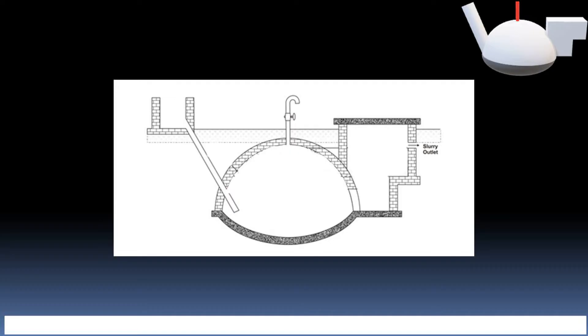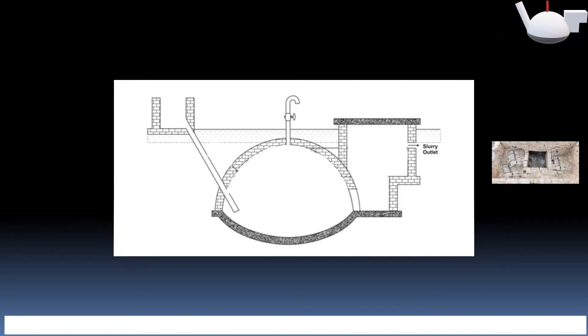This is an empty biogas plant. You can also see empty outlet shown here. Initially, the digester is filled with uniform mixture of dung and water in 1:1 ratio.